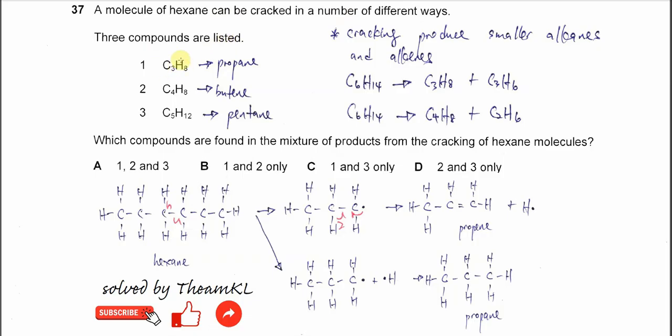They are propane, butene, and pentane. Which compounds are found in the mixture of products from the cracking of hexane molecules?